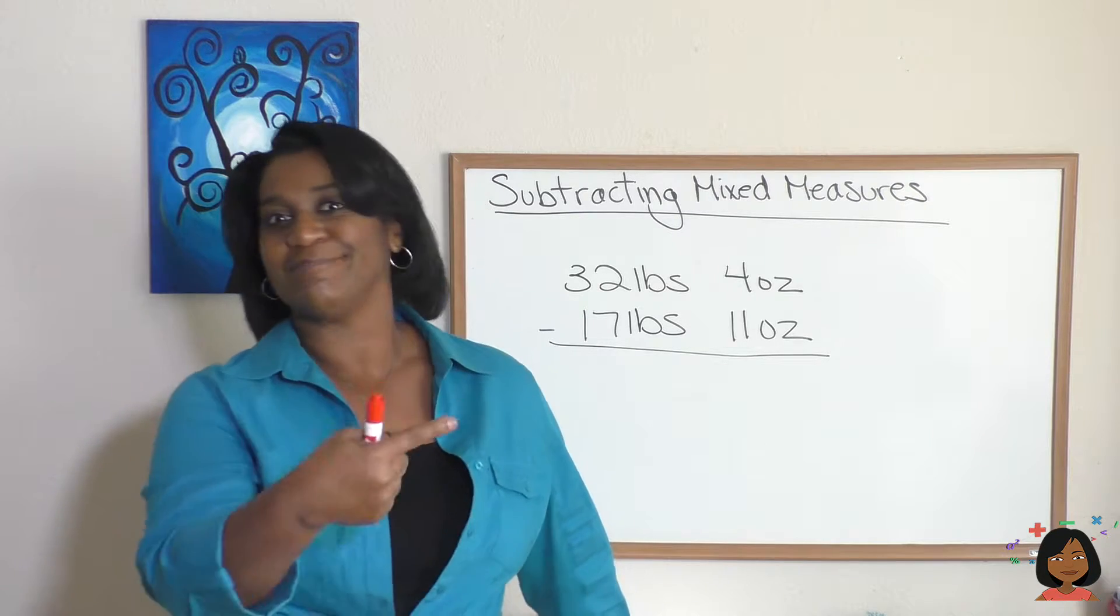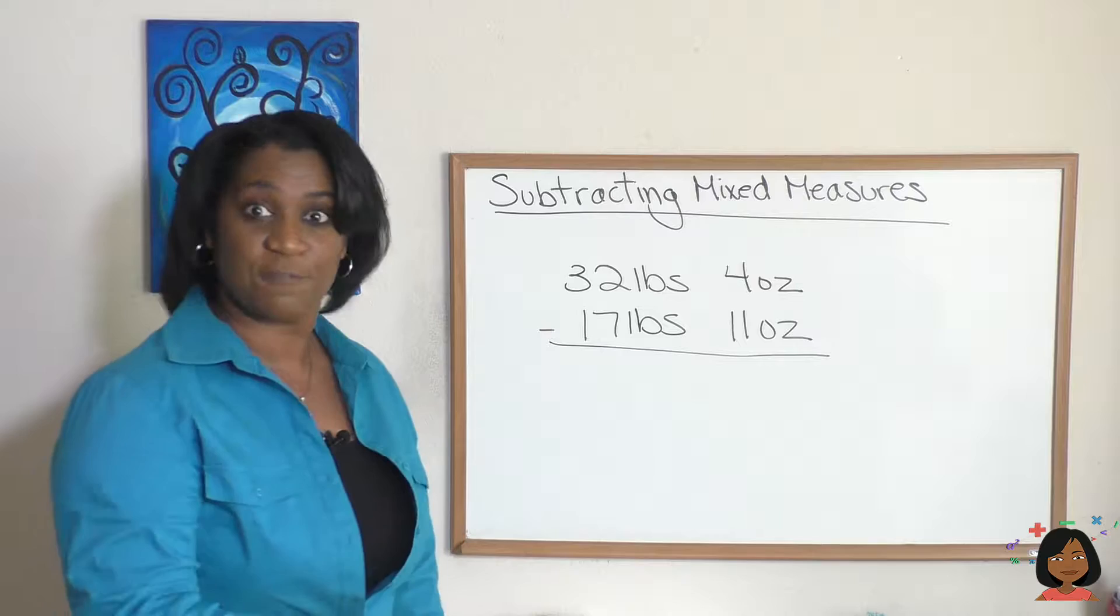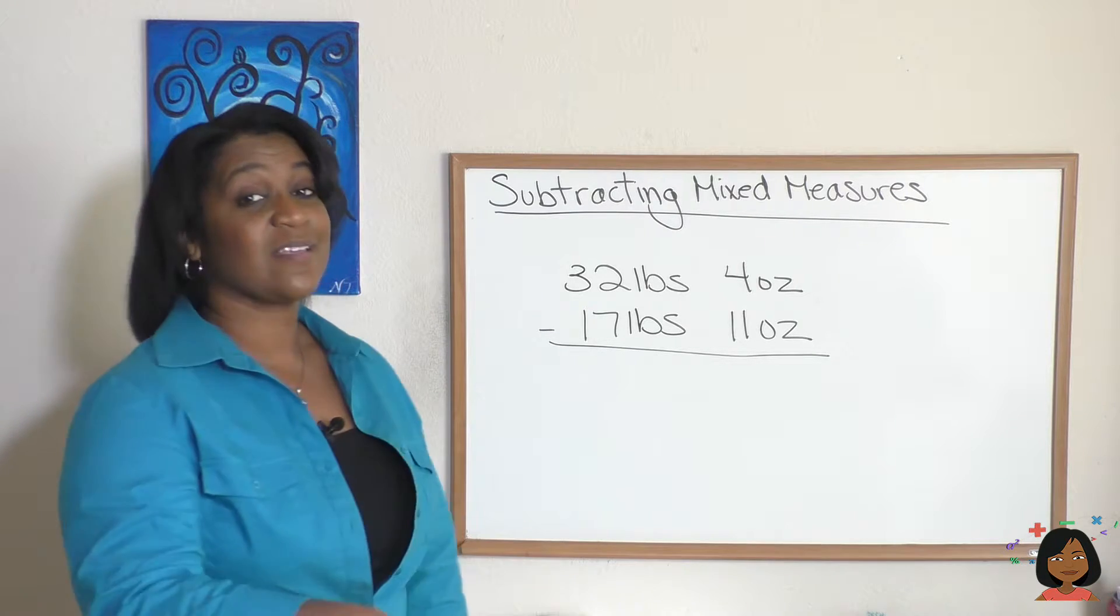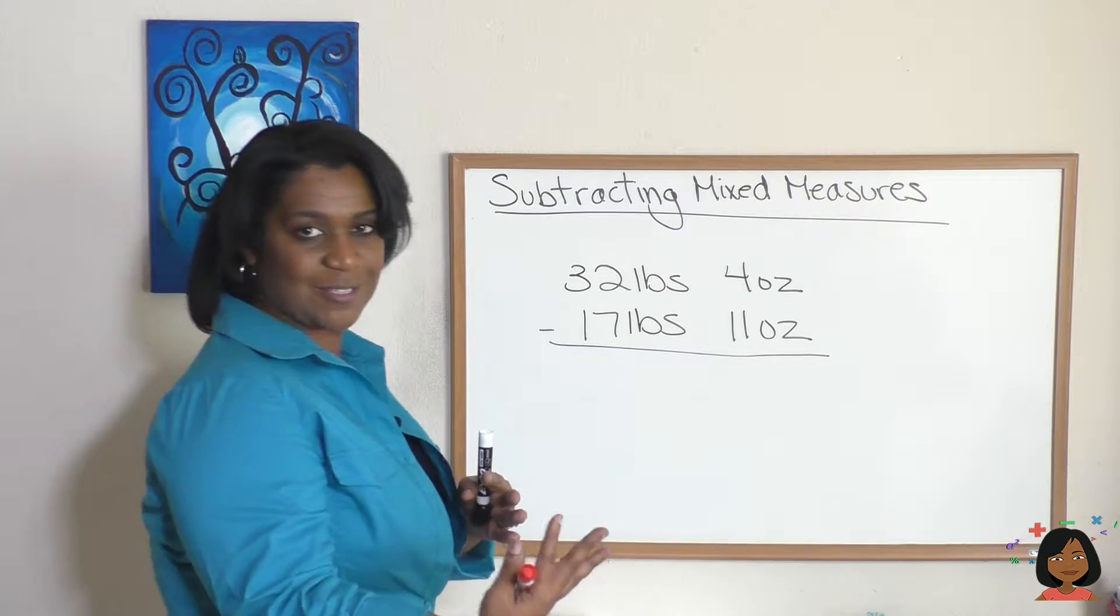Take a look at this problem here. We have 32 pounds 4 ounces subtract 17 pounds 11 ounces. So when we go to subtract, you remember how to do this - we do them individually, right? Let's handle the ounces, then we're gonna handle the pounds.